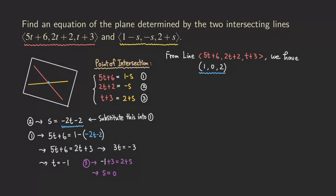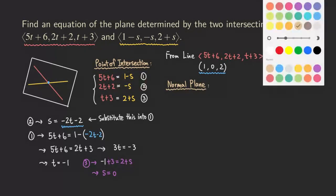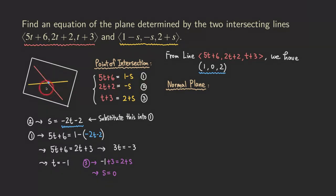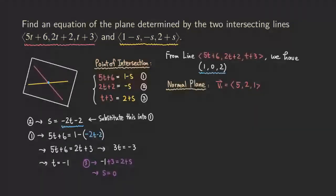The next step is to find the normal vector of the plane. Since the plane contains the two lines, we can use the two direction vectors of the lines and take their cross product. The direction vector for the first line is just the coefficients of t: V1 = (5, 2, 1). For the second line, the coefficients of s give V2 = (−1, −1, 1).